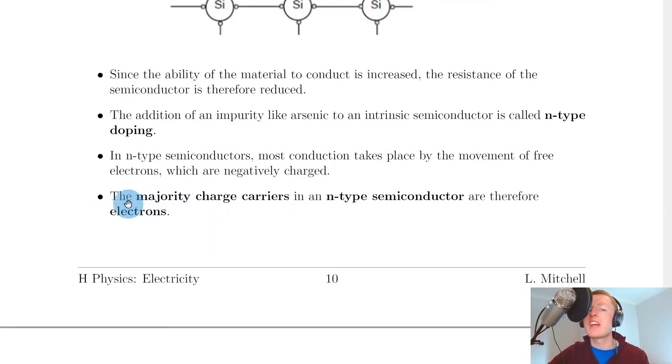One way to remember this is that electrons are negatively charged, and n is obviously the first letter in the word negatively, so you could think about electrons as being connected to n-type. But remember n-type semiconductor materials themselves are actually neutral, not negatively charged.